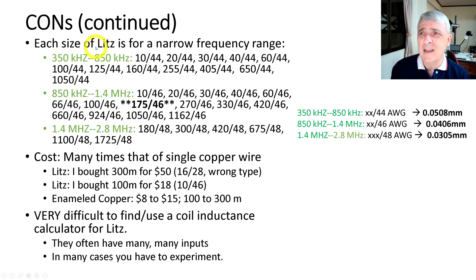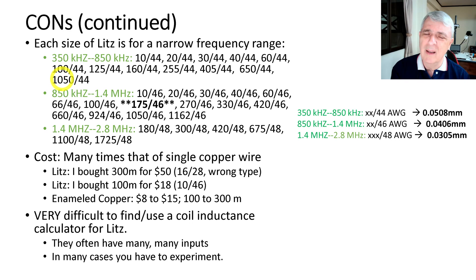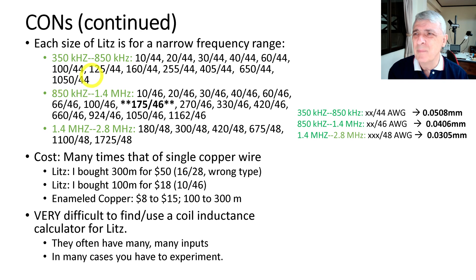Each size of litz wire covers a narrow frequency range. For 350 to 850 kilohertz — the bottom of the AM band — any of several wire sizes should suffice. More strands mean a bigger overall cable and higher current handling. For the middle to upper AM band, 850 kilohertz to 1.4 megahertz, there are different wire options — notice they're all something/46, meaning 46 is the wire gauge.